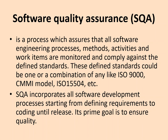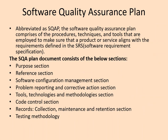The SQA plan — Software Quality Assurance Plan — comprises the procedures, techniques, and tools employed to make sure that the product or service aligns with the requirements defined in the Software Requirement Specification. The SQA plan consists of: a purpose section, reference section, software configuration management section, problem reporting and corrective action section, tools technologies and methodology section, code control section, records collection and retention section, and finally the testing methodologies.